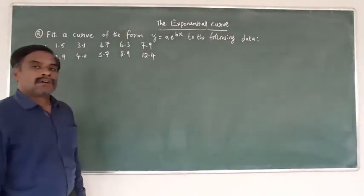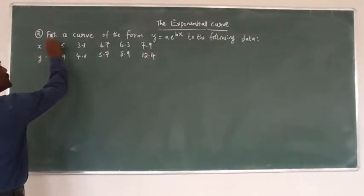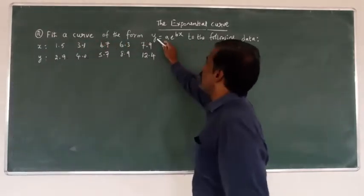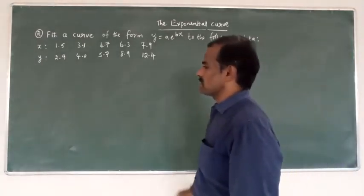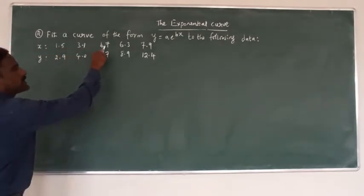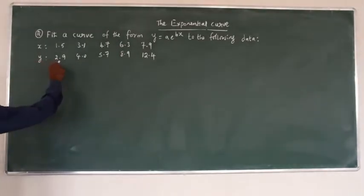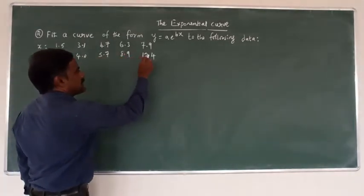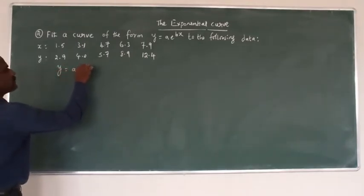Good morning. Second summary problem: fit to the power form y equal to ae^(bx) for the following data. The x values are 1.5, 3.1, 4.7, 6.3, 7.9, and the corresponding y values are 2.9, 4.0, 5.7, 8.9, and 12.4. In the formula y equal to ae^(bx), this is called equation 1.